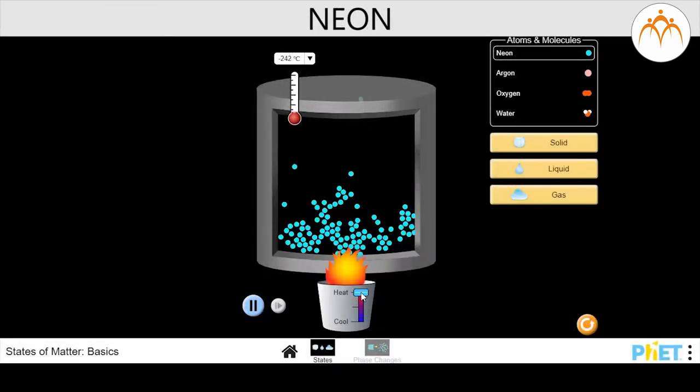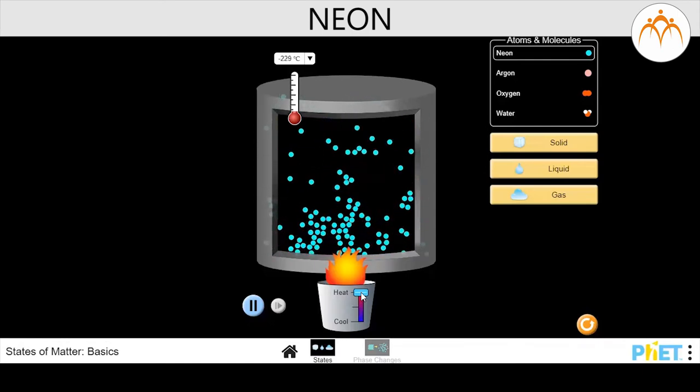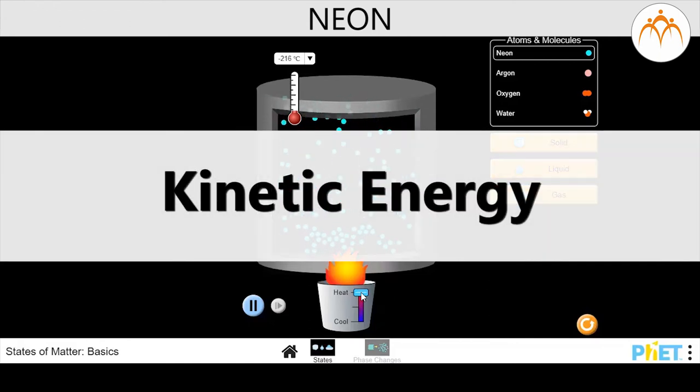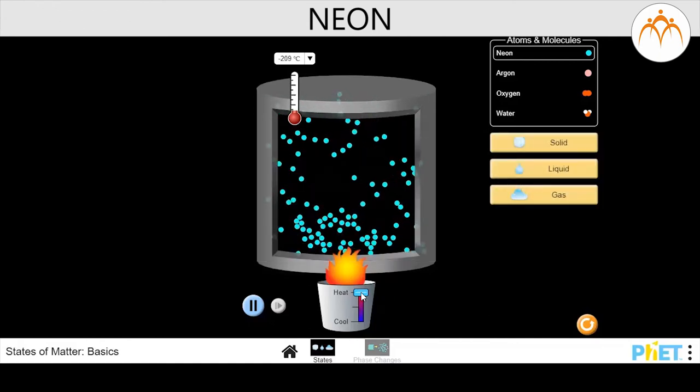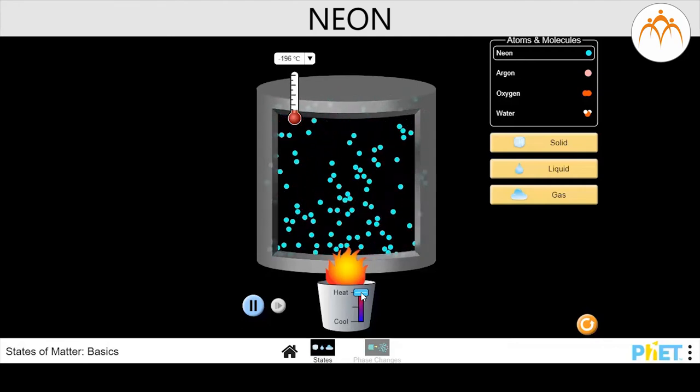Here is how neon atoms react when heated to higher temperatures. As atoms are moving all the time, they have kinetic energy. The total kinetic energy of the atoms in a substance is the measure of heat contained in that substance.